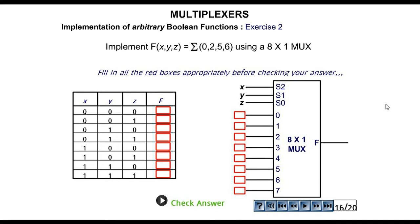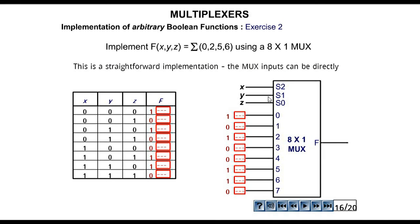For exercise 2, we have the logic function F(x, y, z) as a product of maxterms 0, 2, 5, and 6. Try to fill up the truth table. The output F responds with 1 at minterms 0, 2, 5, and 6, and 0 elsewhere. The complete output column is: 1, 0, 1, 0, 0, 1, 1, 0.